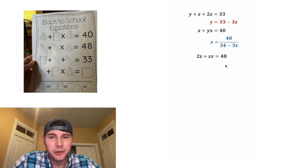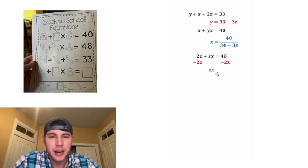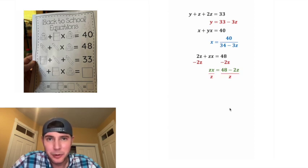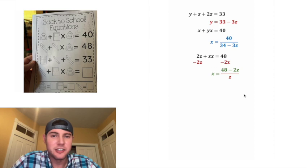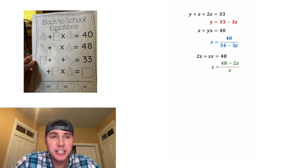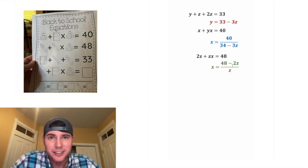Now let's work on the last remaining equation. Let's subtract 2z from both sides — on the left hand side we have zx, and on the right hand side we have 48 minus 2z. Then we can divide both sides by z. These z's cancel, leaving x equals (48 minus 2z) over z. So now we have x expressed two different ways in terms of z.